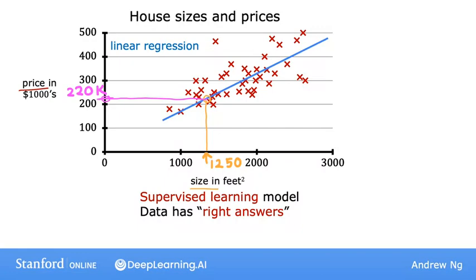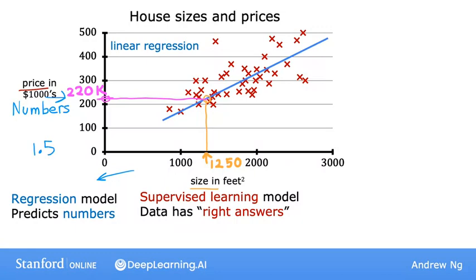This linear regression model is a particular type of supervised learning model. It's called a regression model because it predicts numbers as the output, like prices in dollars. Any supervised learning model that predicts a number such as 220,000 or 1.5 or negative 33.2 is addressing what's called a regression problem.